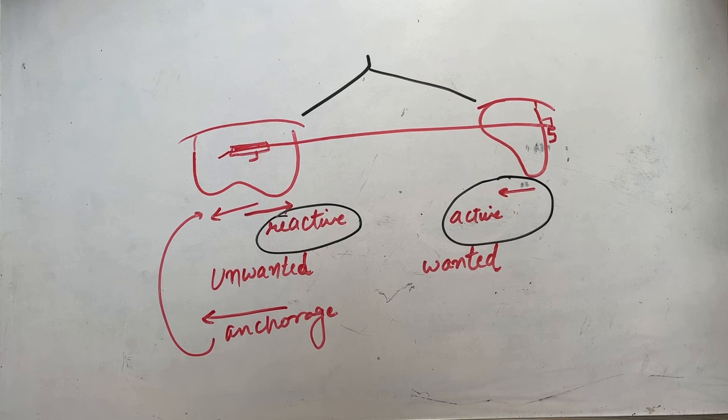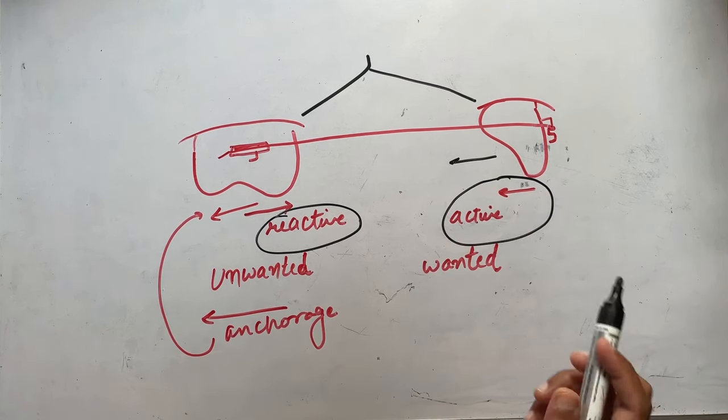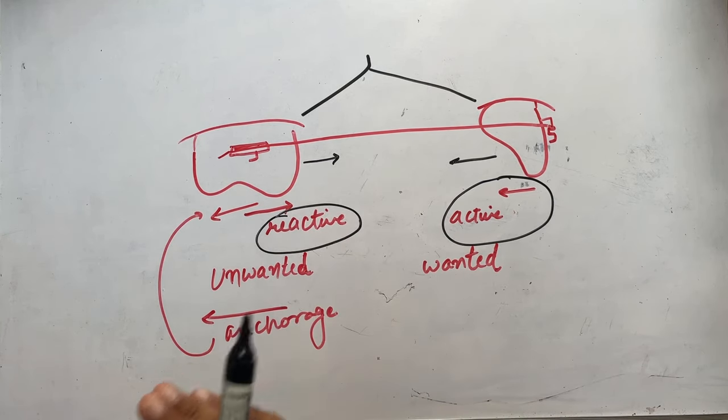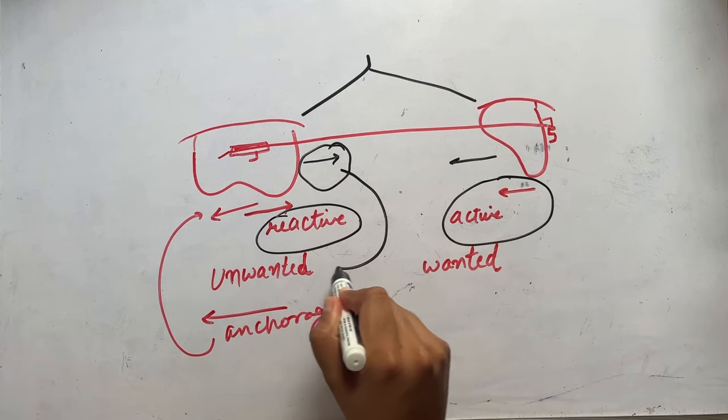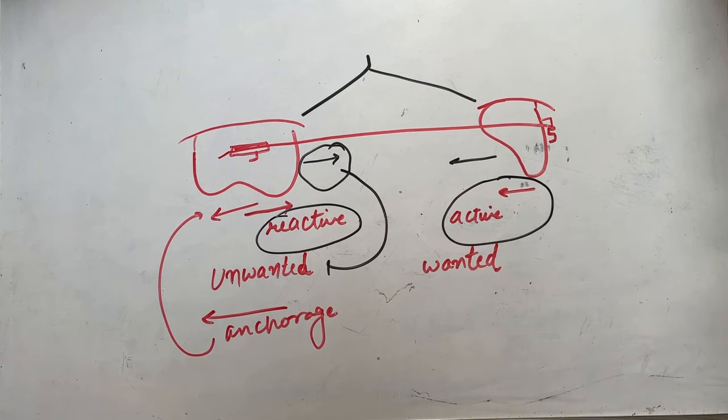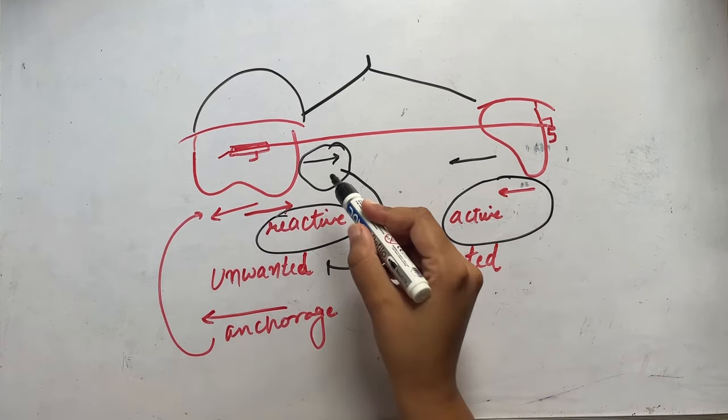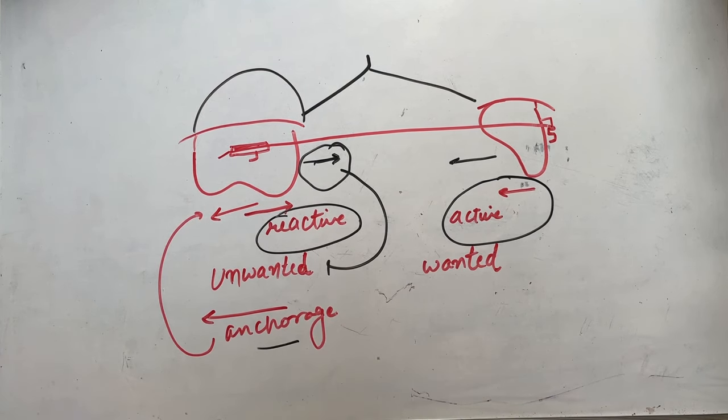The movement we will be using is the resistance to unwanted tooth movement. My wanted movement is retraction of incisors, while the reactive movement will cause molar to tip mesially. This is my unwanted tooth movement which I do not want.